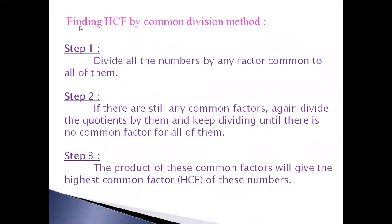Next method: finding HCF by common division method. Step one: divide all the numbers by any factor common to all of them. Step two: if there are still any common factors, again divide the quotients by them and keep dividing until there is no common factor for all of them. Step three: the product of these common factors will give the highest common factor of these numbers.